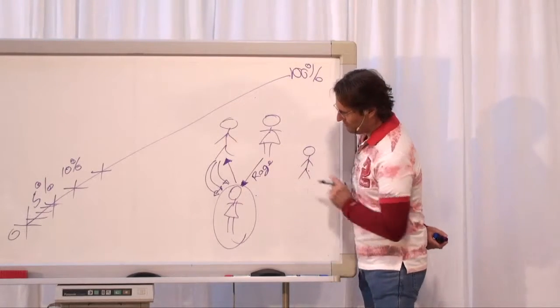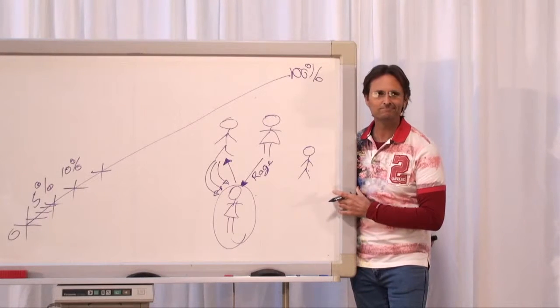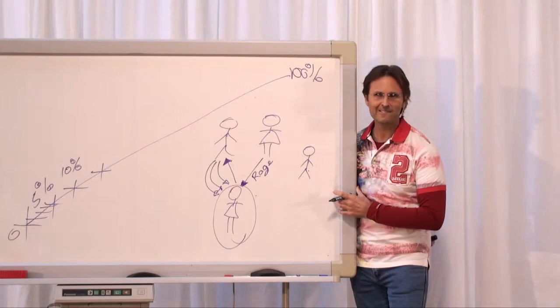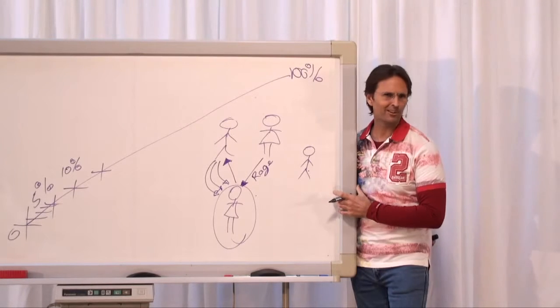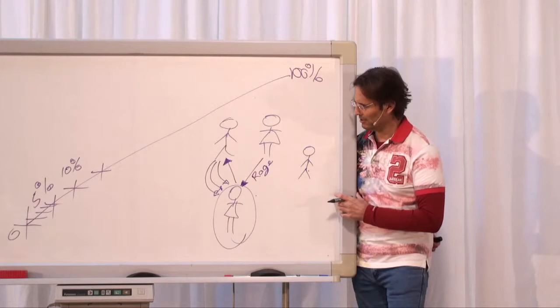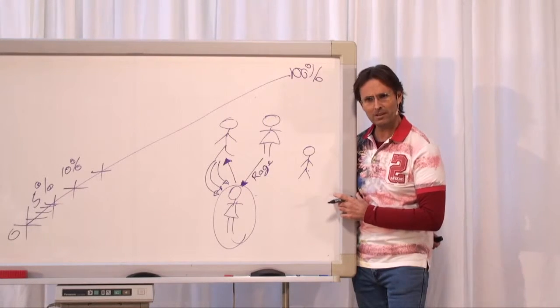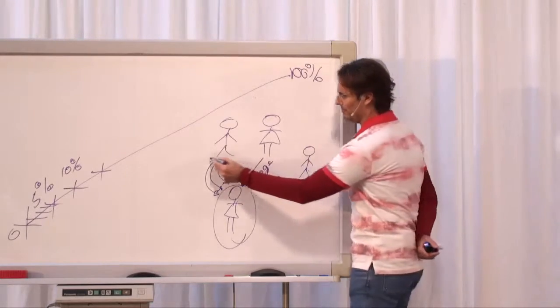Now, who does Laura forgive? It's fairly obvious, isn't it? Her mum. Forgive. Is it just her mum? No, her mum and her dad. Right. So she's got to forgive her mum and her dad.